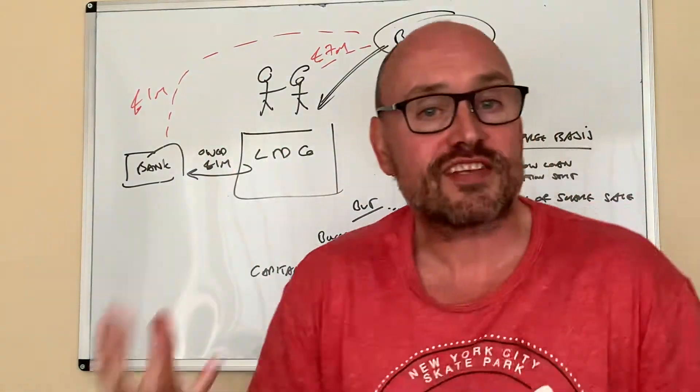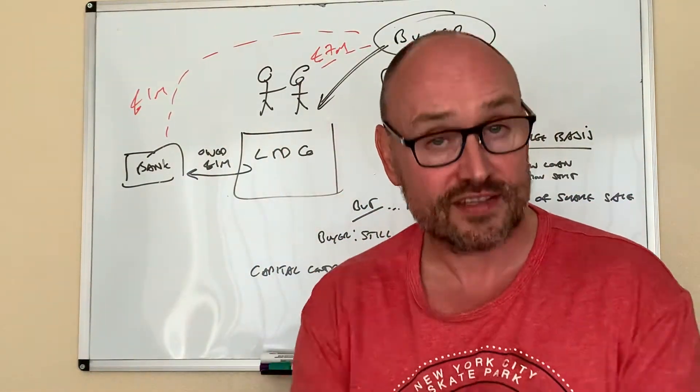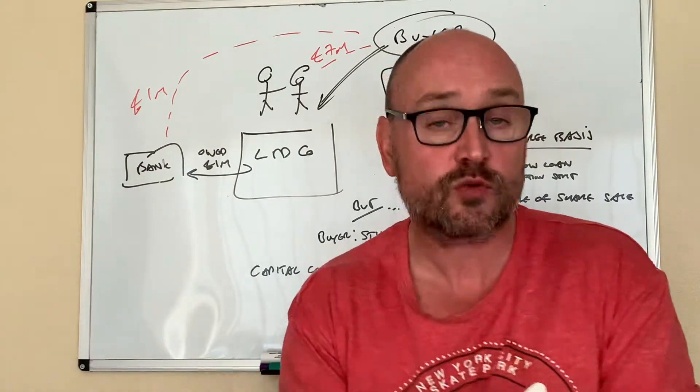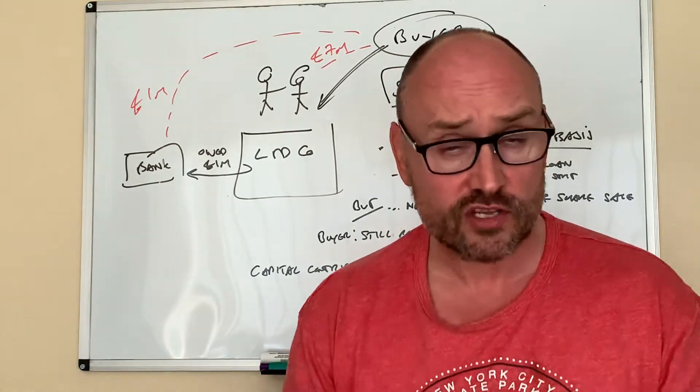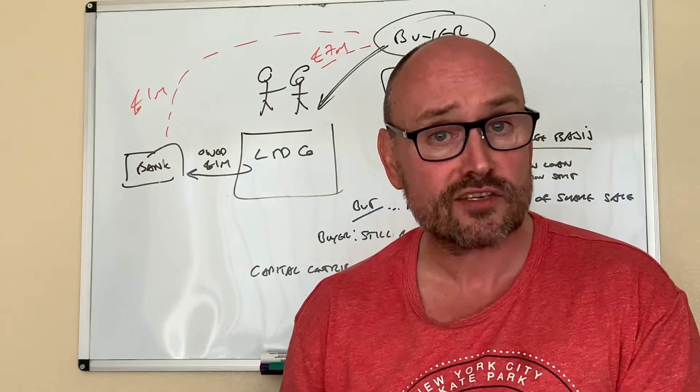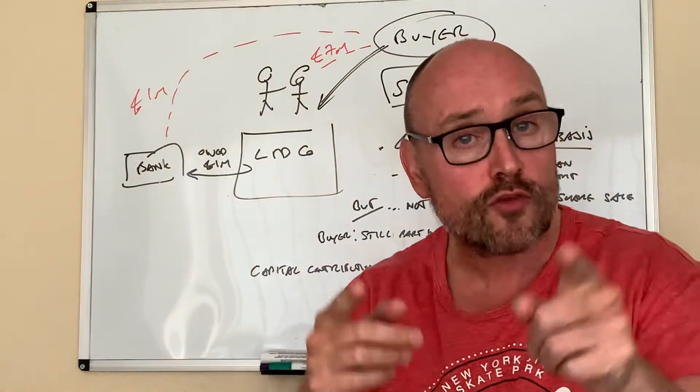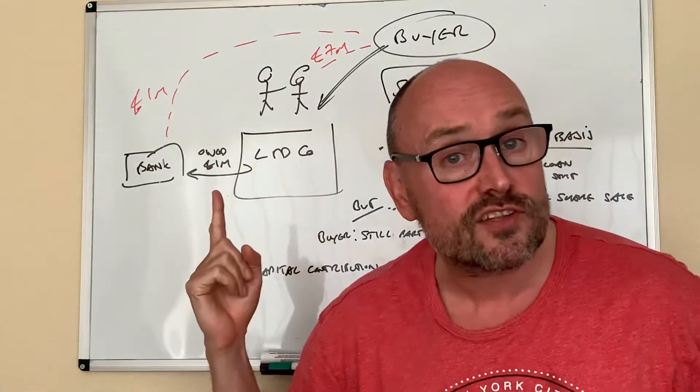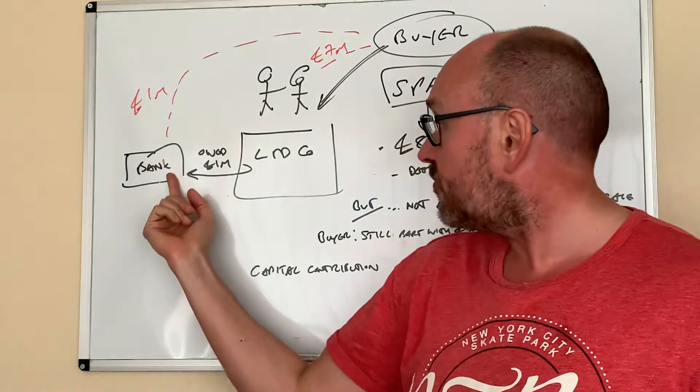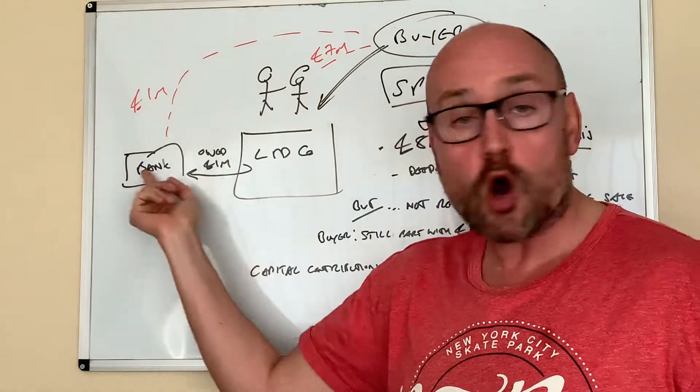So they've got the same end game as they wanted. This is the buyer. The buyer still parts with eight million pounds of cash. They get a trading company that is unencumbered. It doesn't owe any debts. It's just the mechanism. Rather than give eight million to these two ladies, they're giving seven million to the two ladies and paid off the million pounds that the company owes to the bank.